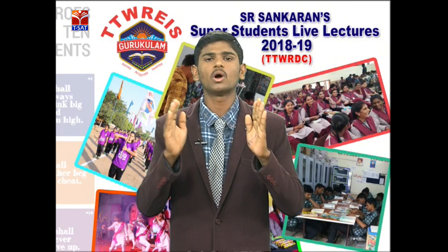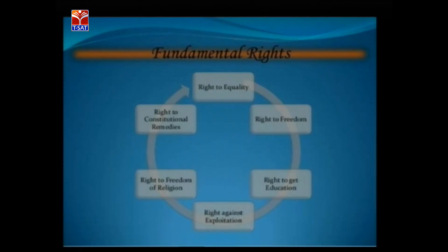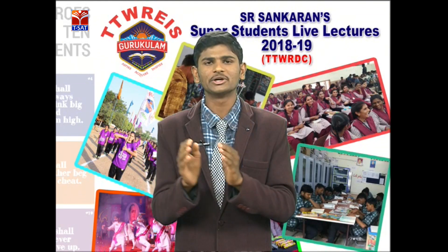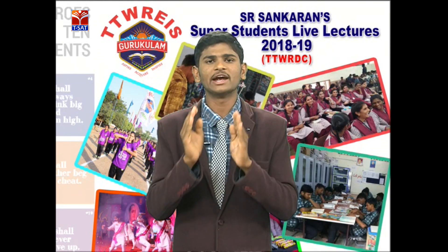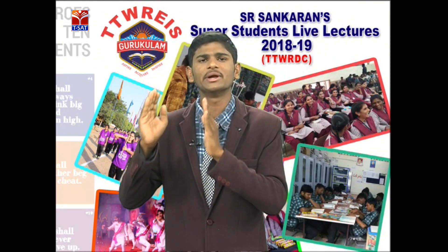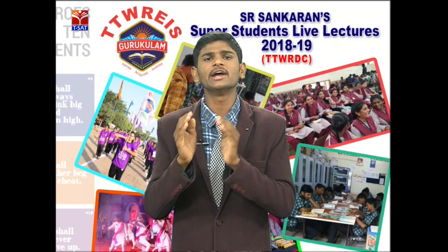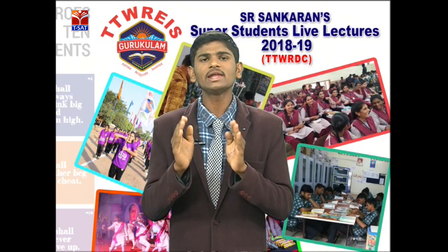Originally, the Indian Constitution had seven fundamental rights: right to equality, right to freedom, right against exploitation, right to religion, right to constitutional remedies, and right to property. But now we have only six fundamental rights. The sixth — right to property — was deleted from fundamental rights by the 44th Amendment Act of 1978 and incorporated as a legal right under Article 300A.